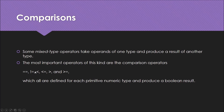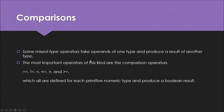If A is smaller than B, the expression A < B gives true. If A is less than or equal to B, that also gives true. The same applies to greater than (>) and greater than or equal to (>=). These operators can be used for different data types, but they will always return either true or false.